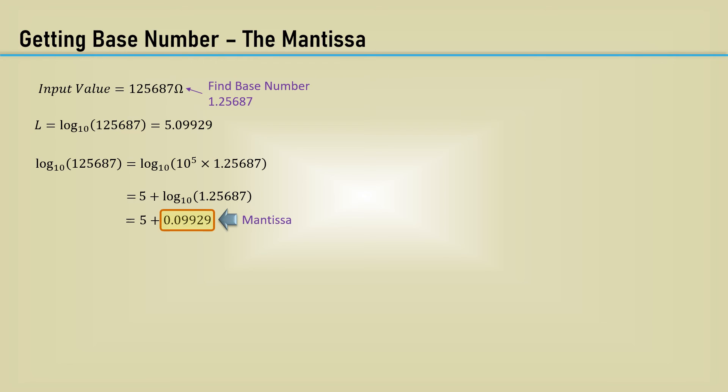Our input could be any number, small or large. To work with the preferred series of numbers, we need to get the base number, which is an integer with a decimal place and trailing numbers. Consider a value of 125,687 ohms. We need to resolve the base number, which would be 1.25687. This can be easily done using the mantissa of the logarithm, which is the fractional part. To understand this better, break up the number into a power of 10. In this case, 10 to the 5th times 1.25687. Bring the 5 out front and the log of 1.25687 is 0.09929.